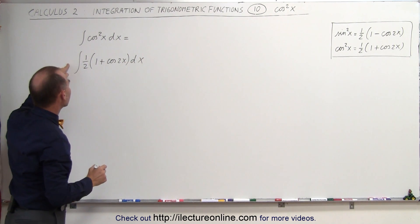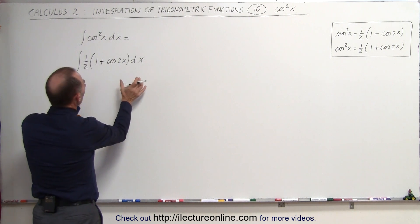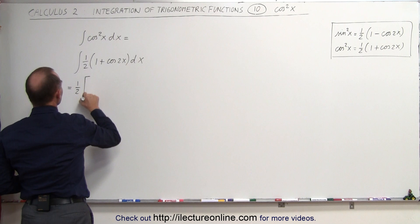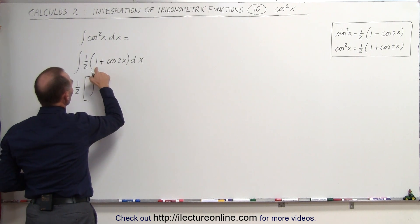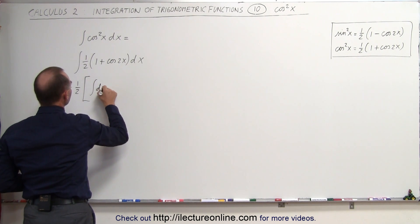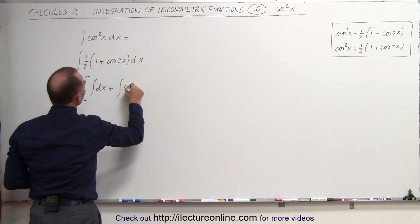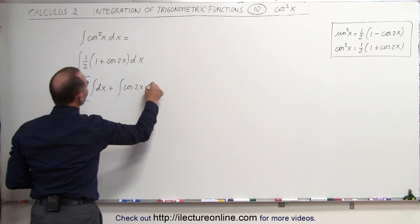Now we can take the 1/2 outside the integral sign and we can split it up into two different integrals, so this can now be written as 1/2 times the first integral which would be 1 times dx plus the second integral which would be the cosine of 2x times dx.